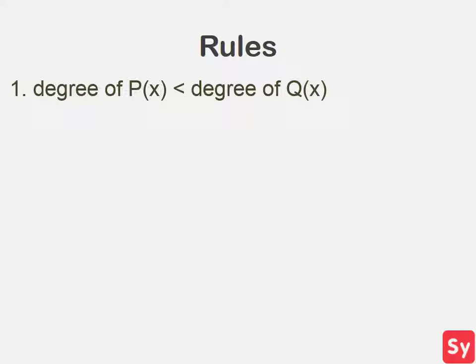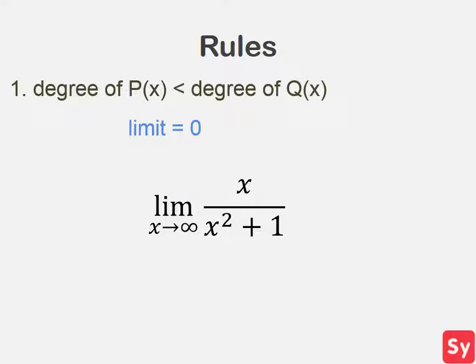Rule one: if the degree of p(x) is less than the degree of q(x), then the limit is always equal to zero. Let's see an example. The limit as x approaches infinity of x over x squared plus one. We'll first look at the largest exponent of the numerator and denominator. One is the largest exponent of the numerator and two is the largest exponent of the denominator. That means the degree of p(x) is less than the degree of q(x), so our limit is equal to zero.